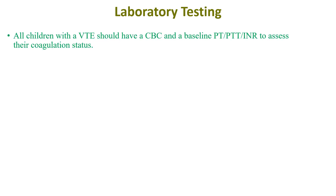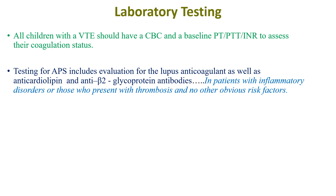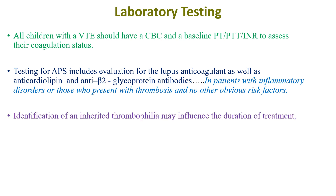On laboratory workup, all children with venous thrombosis should have a CBC and baseline coagulation profile. Testing for antiphospholipid syndrome includes evaluation for lupus anticoagulant as well as anticardiolipin and anti-beta-2-glycoprotein antibodies, particularly in patients with inflammatory disorders or those presenting with thrombosis and no other obvious risk factors. Identification of inherited thrombophilia may influence the duration of treatment, as inherited disorders may require lifelong therapy.